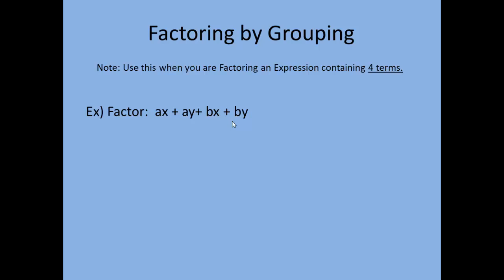If you can't factor anything out of all four terms, what you want to do is factor something out of each set of two — you're going to make two groups of two. From the first group, ax and ay, the only factor they have in common is a, so we're going to factor out a GCF of a. For the second group, bx and by, the only factor they have in common is b, so we're going to factor out b.